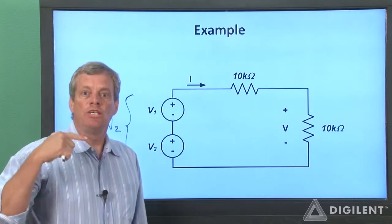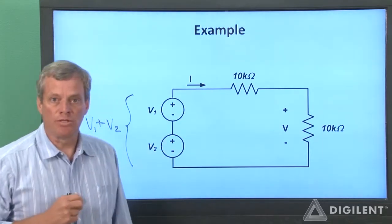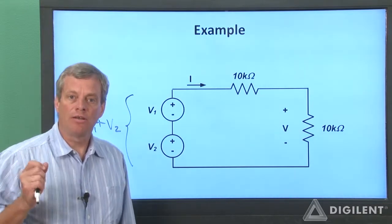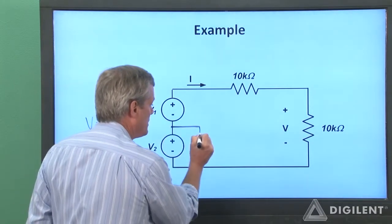Now we just need to use the voltage sources on the analog discovery to sum to 8 volts. Remember that the analog discovery sources all share a common ground, so we're stuck with putting ground here.